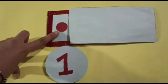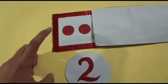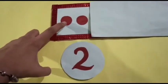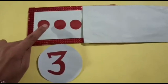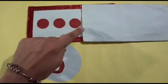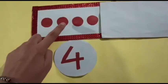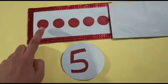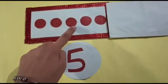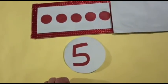Let's see. One dot. Now let's count the dots. One, two, two dots. One, two, three. Now three dots. One, two, three, four. Four dots. One, two, three, four, five. Five dots.